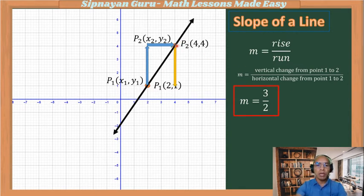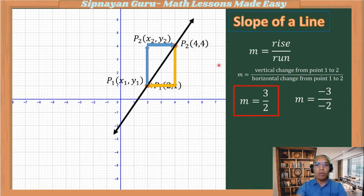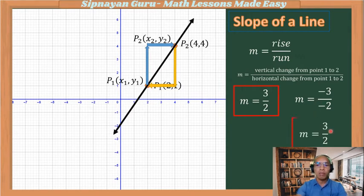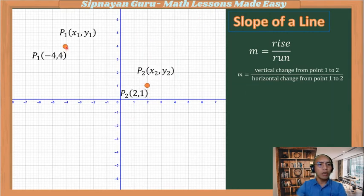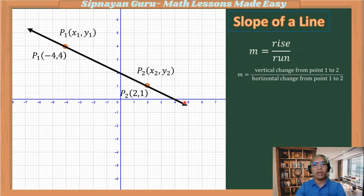What if we start from point two going to point one? From here we go down 3 units — that is negative 3 — then from this point we go left — that is negative 2. So the vertical distance is negative 3 and the horizontal distance is negative 2. Negative 3 divided by negative 2 is still positive 3 over 2. So the slope of this line is positive 3 over 2. Now, point one has coordinates (−4, 4) and point two has coordinates (2, 1). What is the slope of the line passing through these two points?